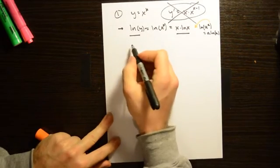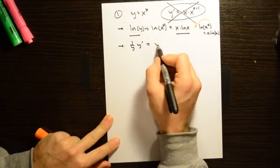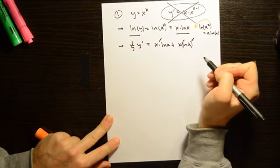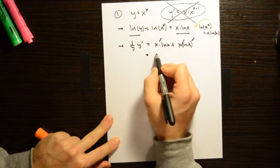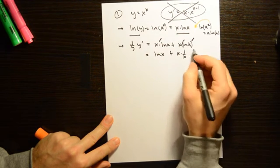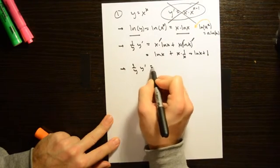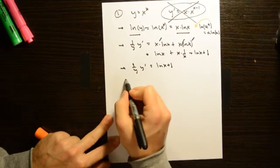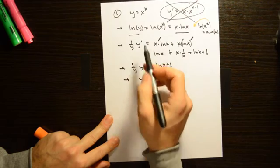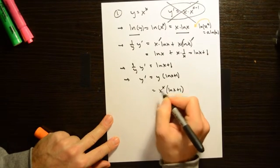Differentiating both sides with respect to x: the left side gives 1 over y times y prime. The right side requires the product rule on x times ln(x): the derivative of x is 1, giving ln(x), plus x times the derivative of ln(x) which is 1 over x, giving 1. So the right side is ln(x) plus 1. Multiplying both sides by y, we get y prime equals y times (ln(x) plus 1), and since y equals x to the x, the answer is x to the x times (ln(x) plus 1).